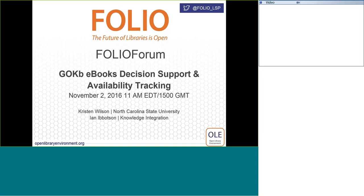GoKB is a project to build an open data e-resources knowledge base. It's a collection of data about titles — both journals and e-books — packages, the way they're bought and sold, and other metadata about organizations involved in that process. GoKB is community managed, with librarians who help collect and curate data for the knowledge base. It's completely open data — everything in GoKB is available CC0 for use for any purpose.